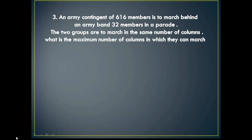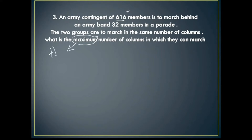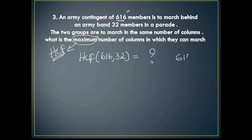Question 3: An army contingent of 616 members is to march behind an army band of 32 members in a parade. The two groups are to march in the same number of columns. What is the maximum number of columns? The keyword 'maximum' means we do HCF. So find HCF of 616 and 32 using Euclid's division lemma and work it out.